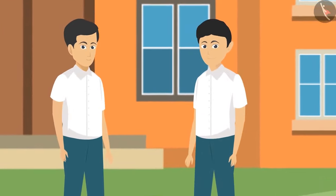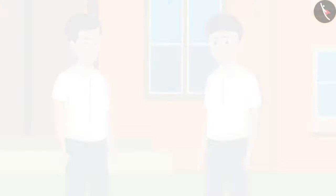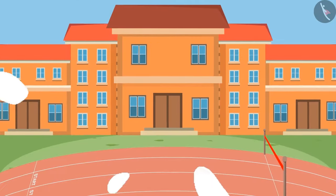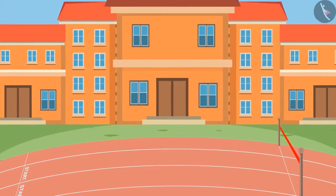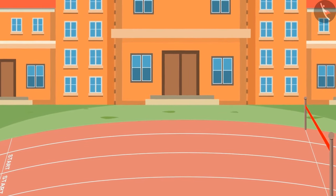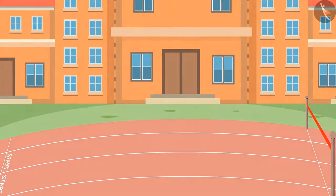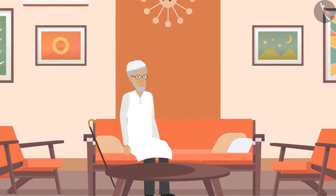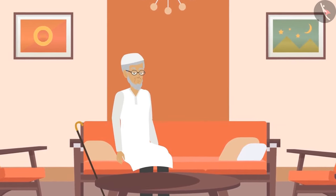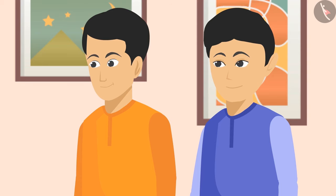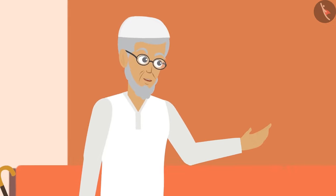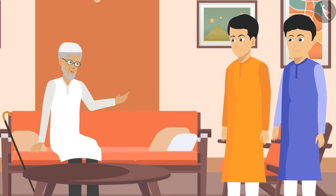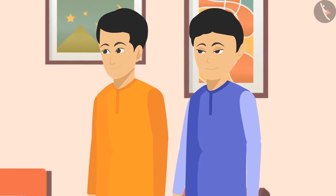Zeeshan and Sikandar, both very intelligent and studious students, live in the same lane. They decided to take part in their school's sports tournaments and want to be trained by Raheem Chacha, a renowned athlete of his time. When the kids approached Chacha with their proposal, he said they must first study about the muscles and bones of the human body — only then would he train them.